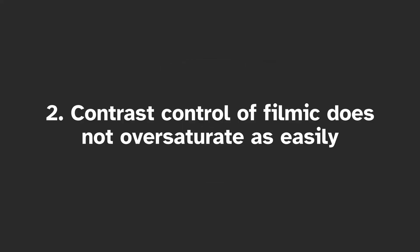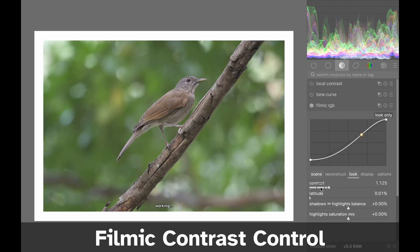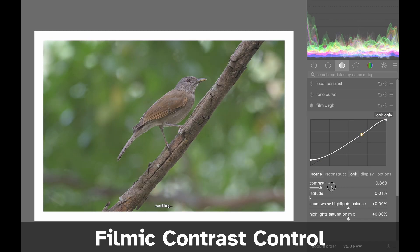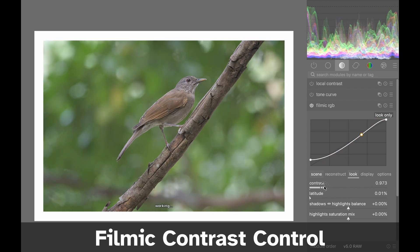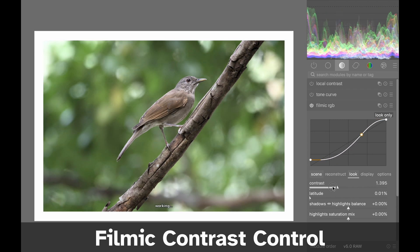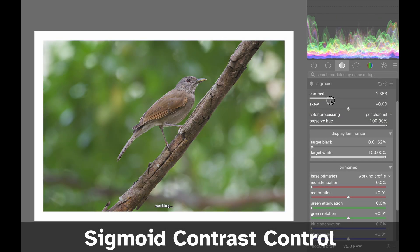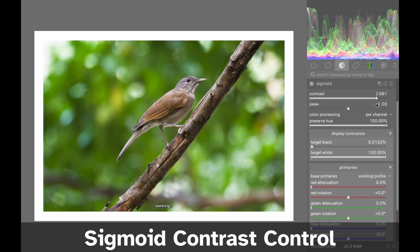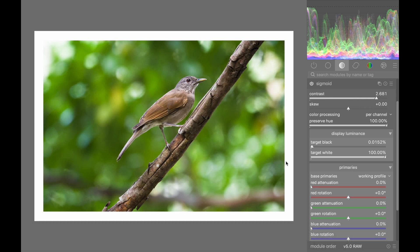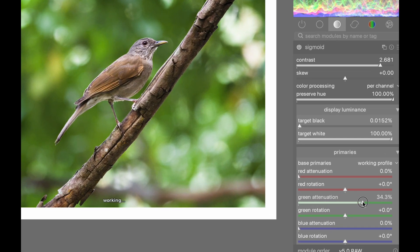Number 2: The contrast control of Filmic also handles colors better in some cases. If you want to control the contrast within either module, the contrast slider of the Filmic module won't tend to oversaturate colors, whereas colors may oversaturate in Sigmoid. However, this can be compensated for by using Sigmoid's primaries tab to attenuate specific color channels.